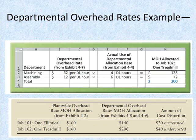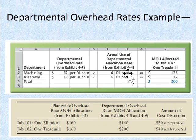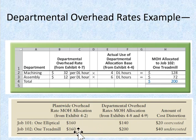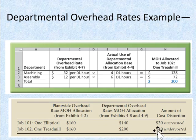Continuing the example with treadmills, we use the same departmental overhead rates. It takes four direct labor hours in machining and six hours in assembly to produce one treadmill, resulting in $200 of overhead allocated to the treadmill. Under the single plant-wide rate, both the elliptical and treadmill would have been allocated the same $160 because both took 10 total direct labor hours. Under departmental allocation, the elliptical is charged $140 — meaning we would have over-costed the elliptical by $20 and under-costed the treadmill by $20.